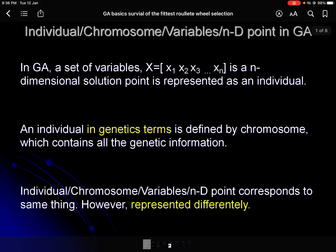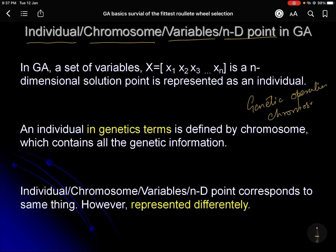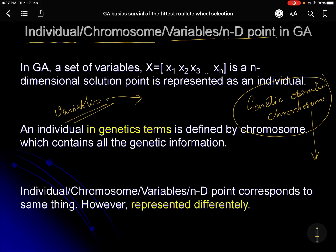In this lecture, we'll first brush up what we have done so far. We have understood what we mean by an individual chromosome or a variable — these are the same things represented in different ways. When you want to do genetic operations like crossover and mutation, you use a chromosome form of representation. When you want to calculate the fitness function, you use the individual or variable form of representation.